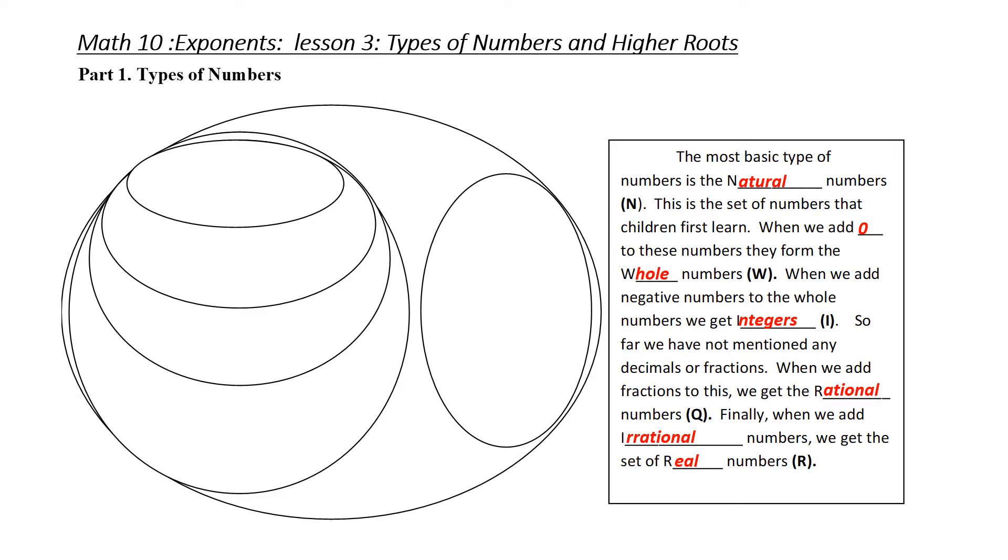When you think of the most basic type of number, it starts at one and keeps going up without decimals or fractions. We call this the natural number set. When we add zero to this, we get the whole number set. Notice the natural number set circle is inside the whole number circle, which means all natural numbers are also whole numbers.